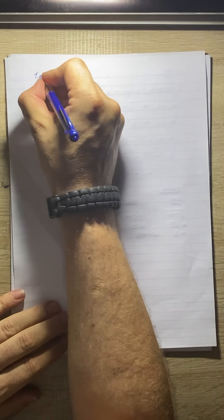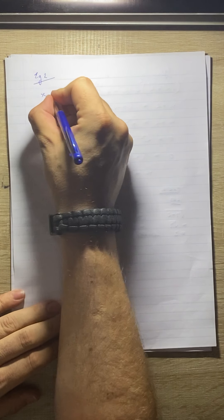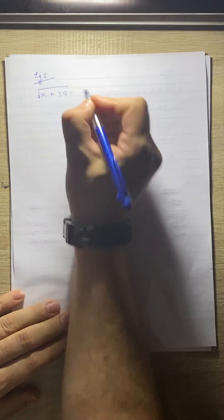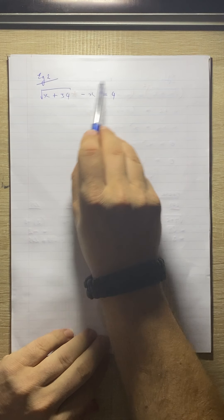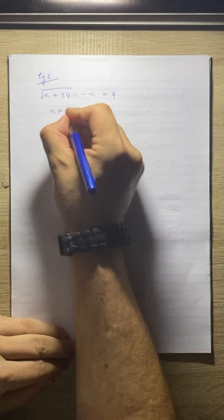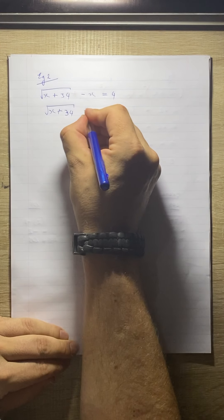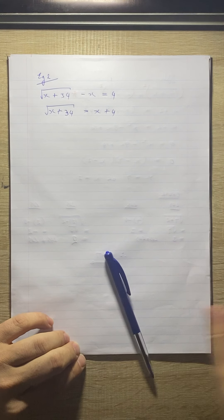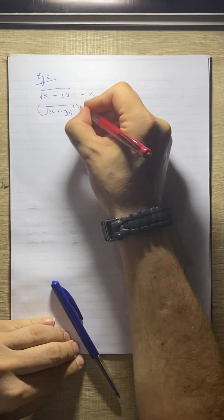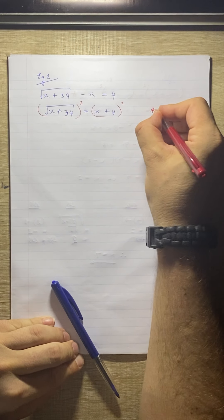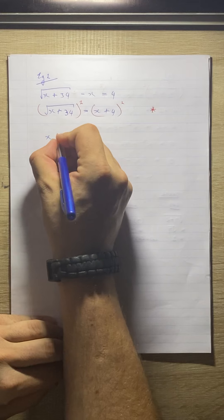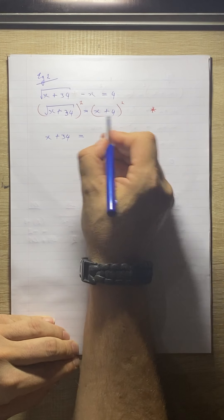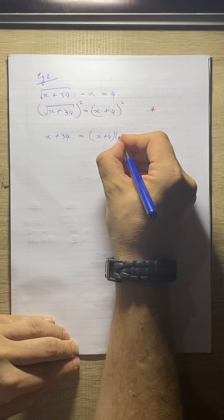Example 2. Like I explained earlier, we need to get that surd on its own. This minus x is messing us around, so take it to the other side and we get the square root of x plus 34 equals x plus 4. Now once I've got that surd on its own I can square both sides. I'll put a star here because I'm going to come back to it for the check. The surd and the square cancel and we're left with x plus 34 equals — remember that means two brackets — x plus 4, x plus 4.